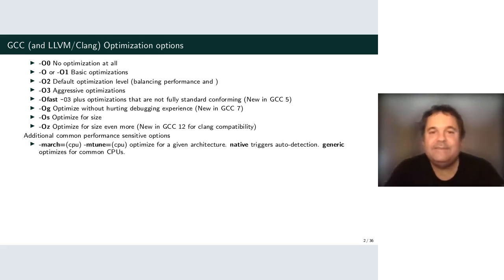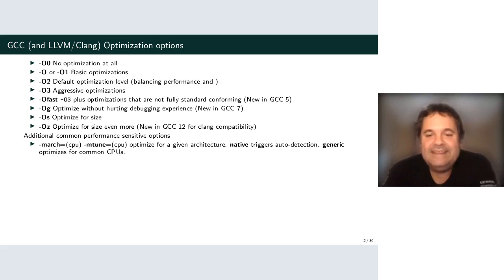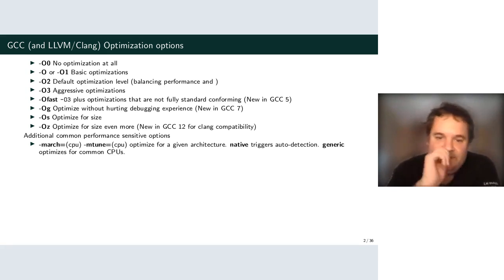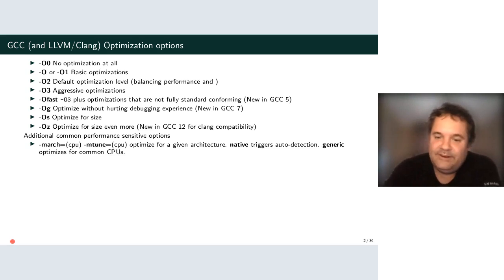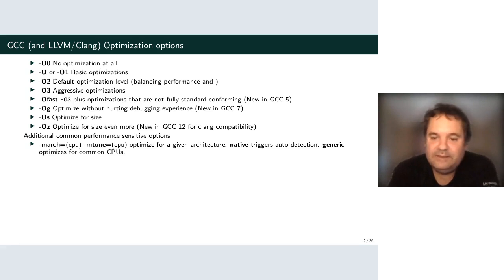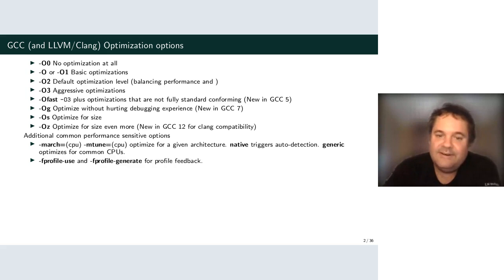There are other important options. One is tuning — we support native tuning and have a generic model supposed to work on all common architectures. We also have architecture levels which enable instruction sets added later on x86-64.